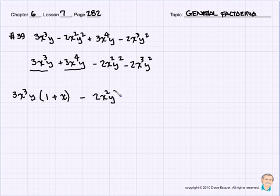Now let's focus on the second two terms, minus, let's factor out a 2x squared y squared. And again, interestingly enough, it leaves us with a 1 plus x.